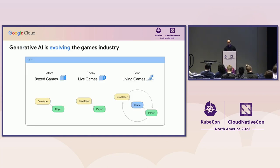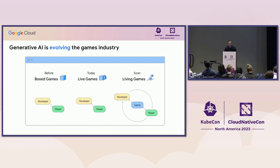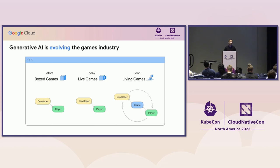As the game industry integrates generative AI, games will continue to evolve. Similar to how the business model evolved from box software games at Best Buy or GameStop to live service games, we will continue to evolve into what some are calling living games. In such a model, the relationship cycle between the player and the developer expands to include the game itself, with all three aspects interacting to enrich the player experience. Game developers will need to implement AI responsibly and securely, safeguarding intellectual property while being vigilant and respecting the player.